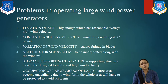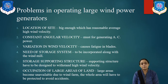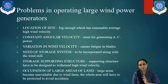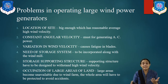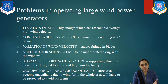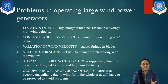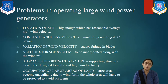Let us study the problems in operating large wind power generators. There are nearly 6 different parts to consider. First is location of site — it should be big enough and have a reasonably high average wind velocity. Location of site is taken as the first priority.